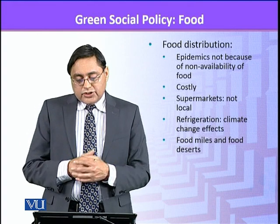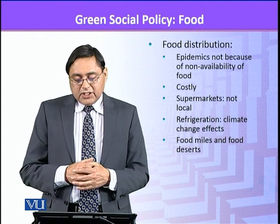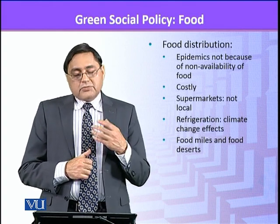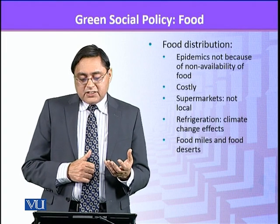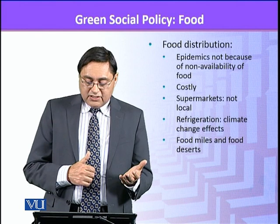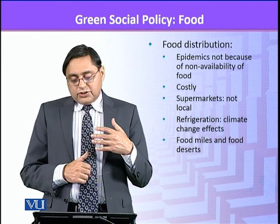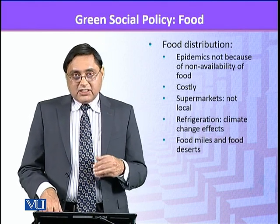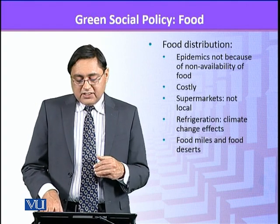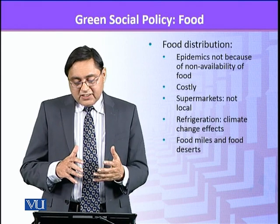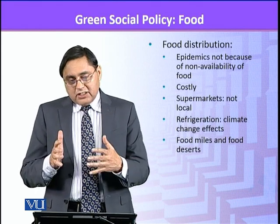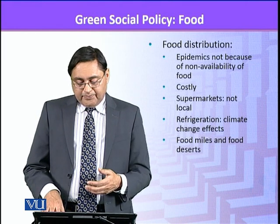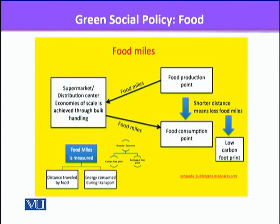Food distribution is also an issue. Famines do not happen because of the unavailability of food, but because of problems in the distribution of food. Food distribution has become costly — supermarkets source food from outside rather than locally. Issues of refrigeration, climate change, and spoilage have also led to more food miles and food deserts, where there is no local food vendor and people have to travel to supermarkets to buy food, which is mostly coming from outside.